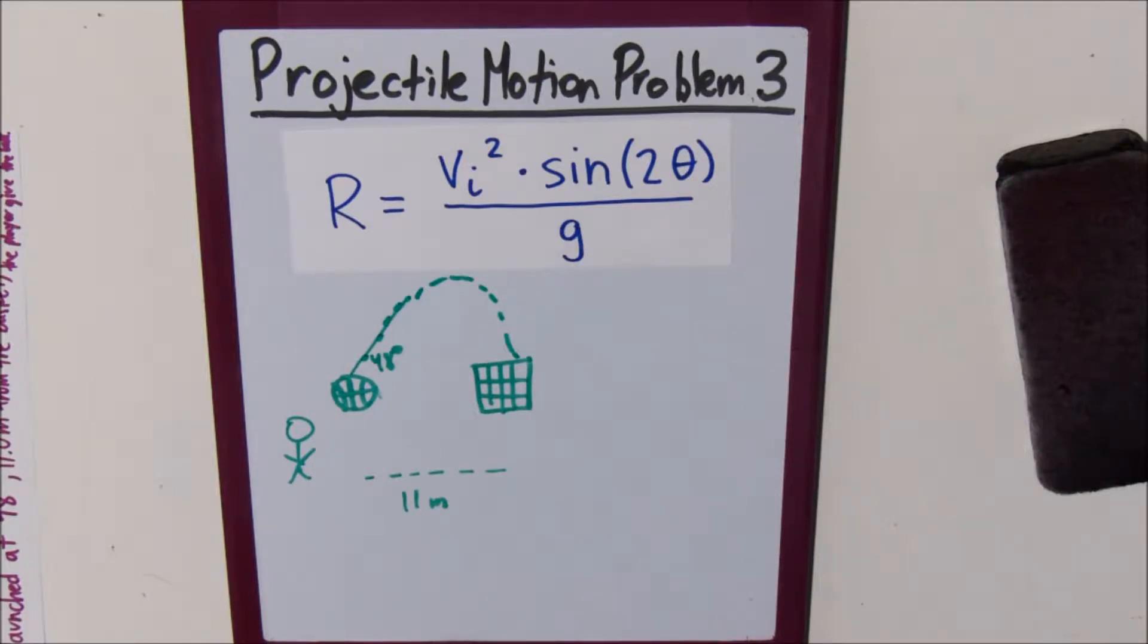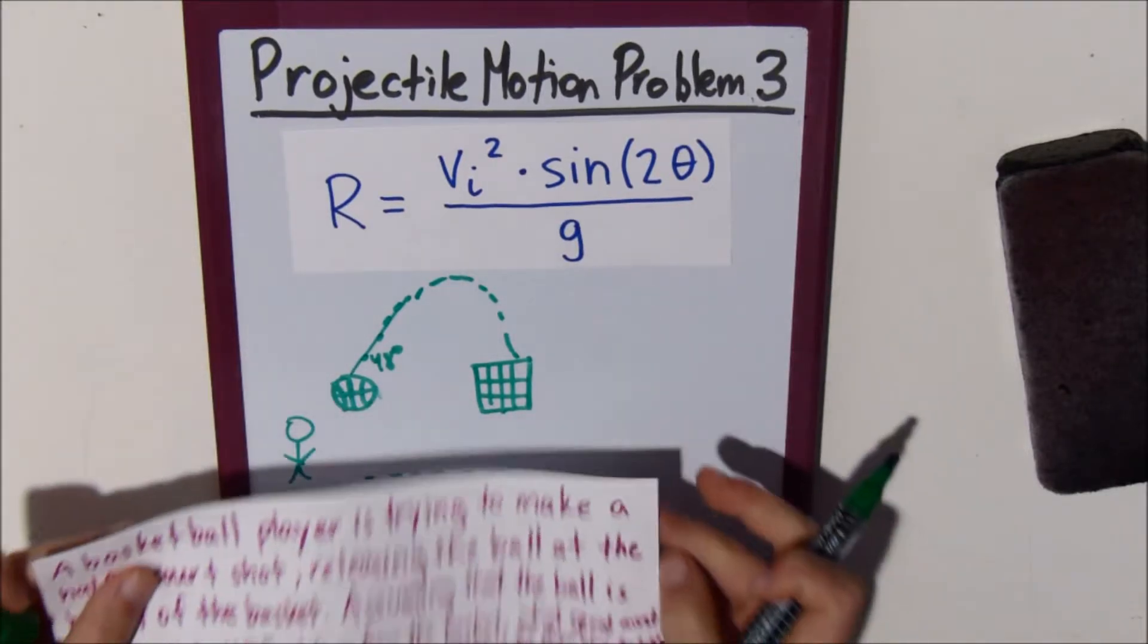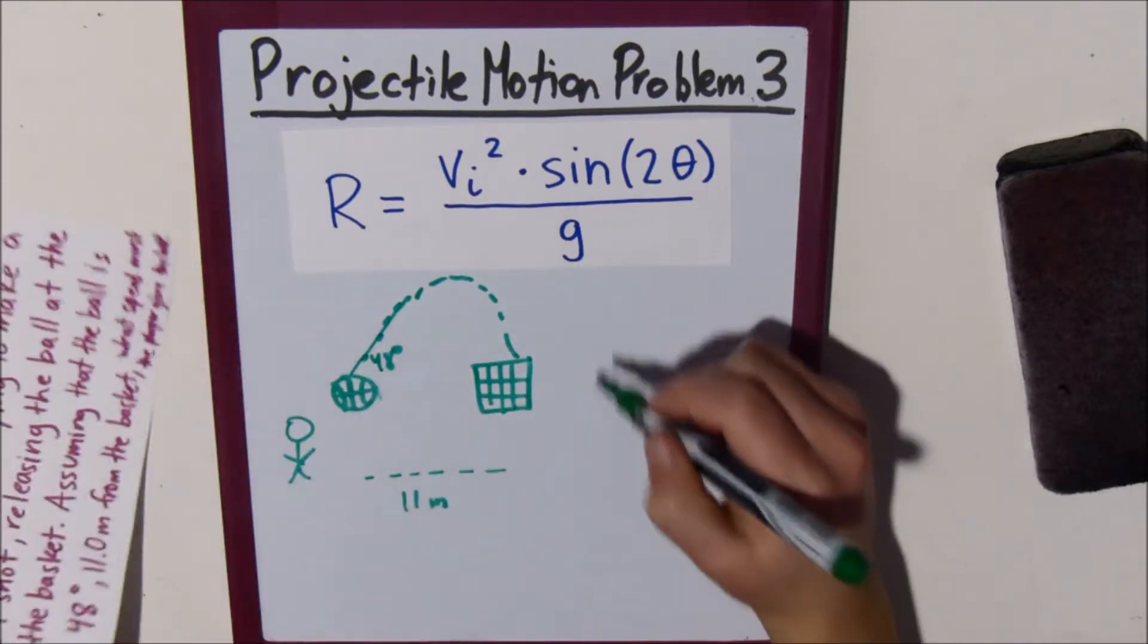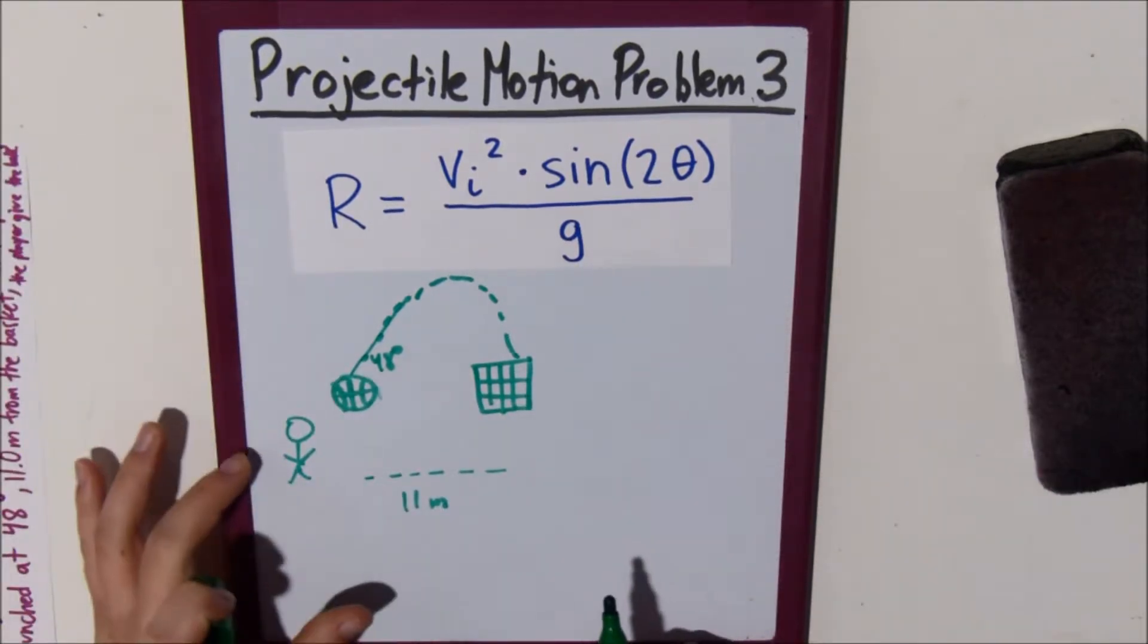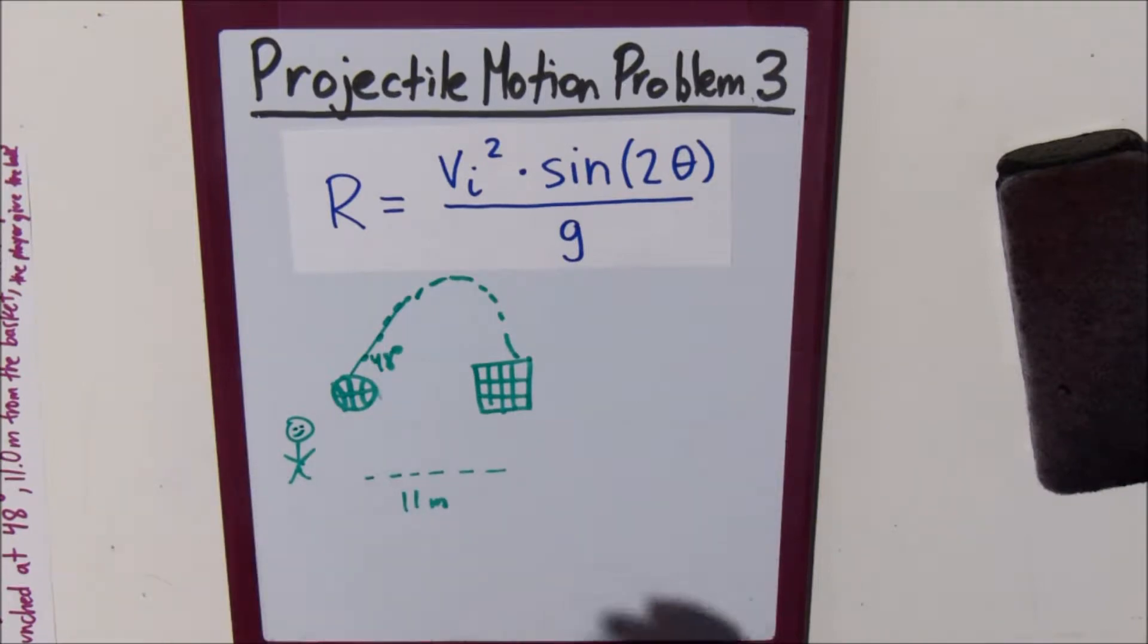So, we're trying to find here, what speed must the player give the ball. So, that means, what is the speed that the player has to give to the ball, so our velocity initial.